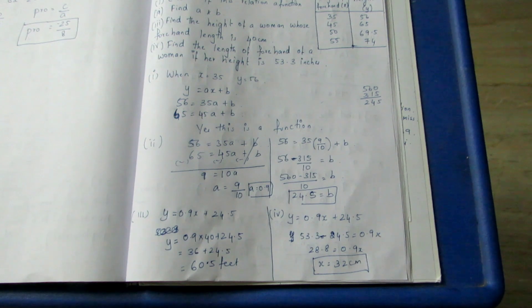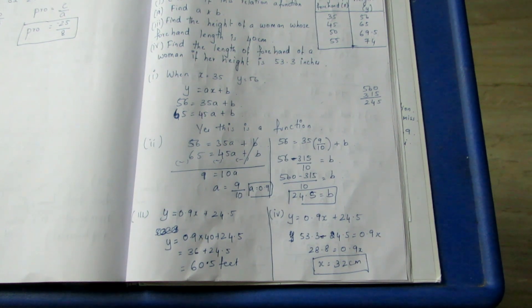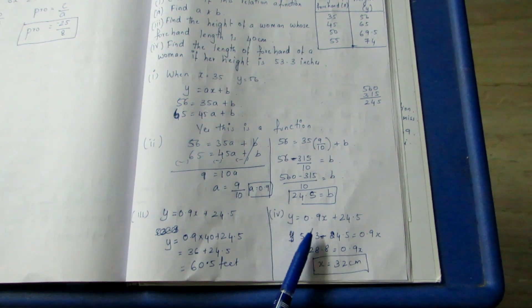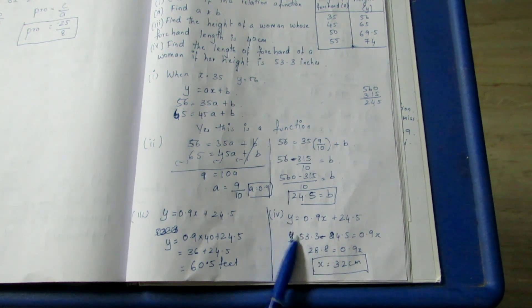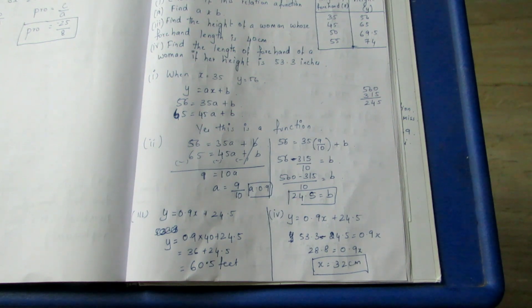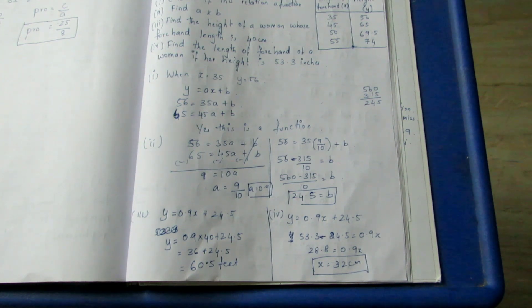For the fourth sub-question: find the length of the forehand of a woman if her height is 53.3. Height means y = 53.3. If you substitute for y, x = 32.